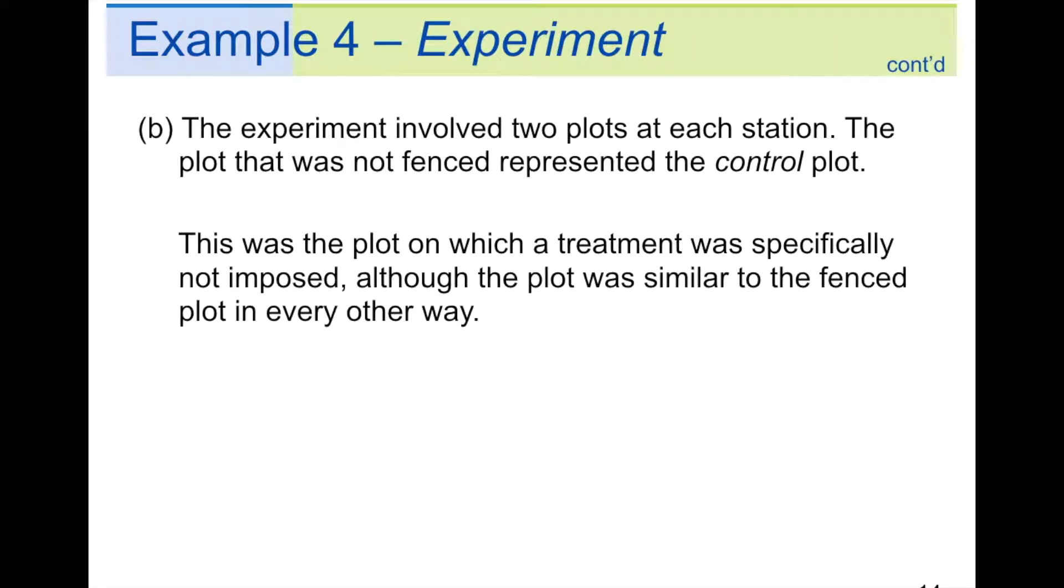The experiment involved two plots at each station. The plot that was not fenced represented the control plot. This was the plot on which a treatment was specifically not imposed, although the plot was similar to the fence plot in every other way. So, the control plot, also known as a control group, is a way to see what your change did. Putting in the fence shows how effective the fence is by looking at the difference between what happened to the control plot. If they were the same, obviously, the fence changed nothing. But, seeing how much change makes having the control plot very important.